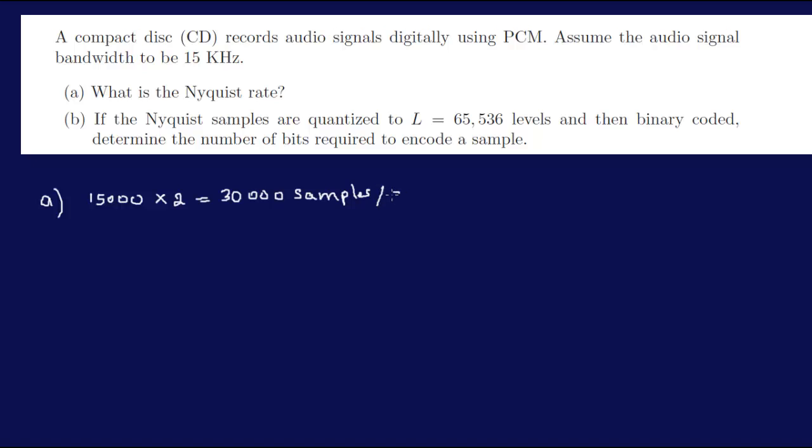Now of course, frequency is cycles per second. Here we're dealing with samples, so the rate is 30,000 samples per second, pretty straightforward.